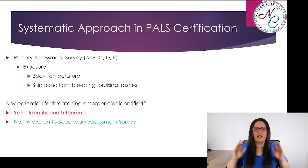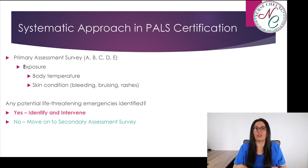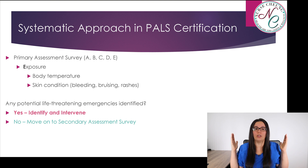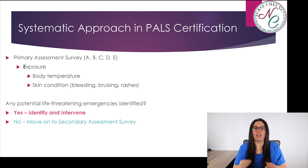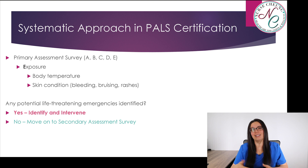Lastly in the primary survey, we have E for exposure. We want to get all the clothes and everything off that child. We're looking at body temperature, skin condition — is there bleeding, bruising, rashes, or any puncture wounds? We want to get everything off and look at everything. If at any point during this assessment we note potential life-threatening emergencies, we want to identify and intervene. However, if there are none, we're going to move on to our secondary assessment.